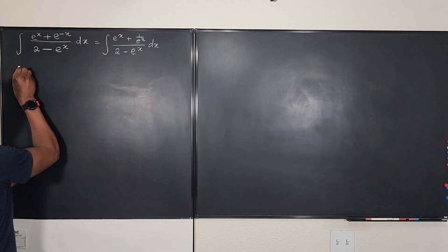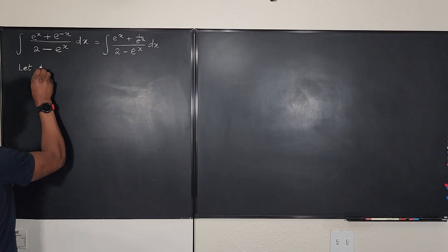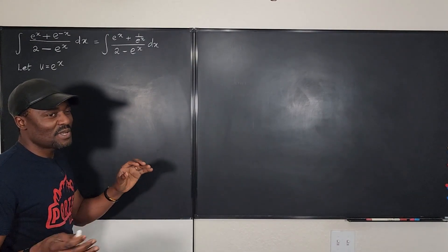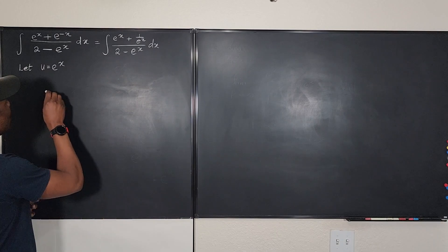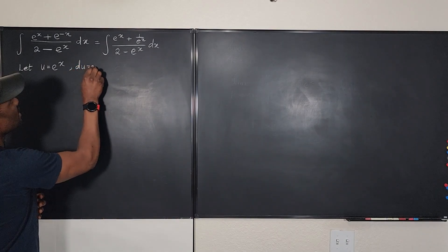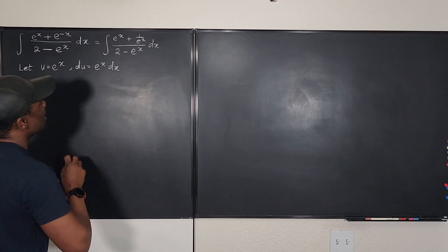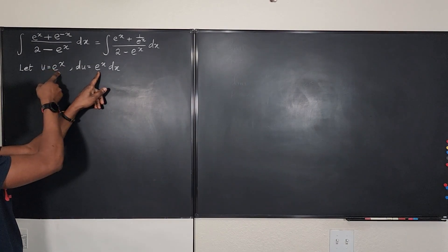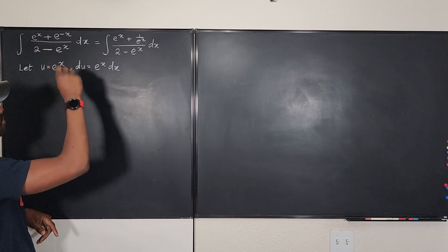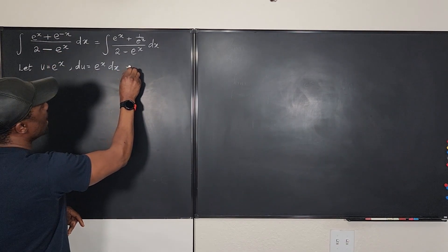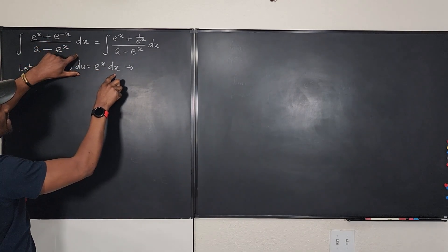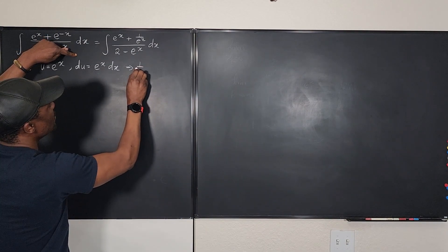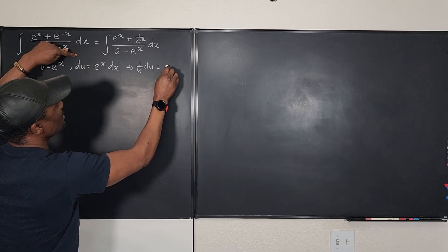I'm going to let u equal e to the x, so I can replace e to the x with u. Then du equals e to the x dx. If I divide by e to the x, I get dx. And since e to the x is u, I can say that 1 over u du is equal to dx.